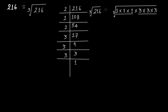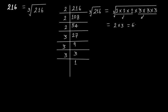So the cube root of 216 is equal to — take one 2 from here multiplied by one 3 from here — that is 6. So 6 is the cube root of 216.